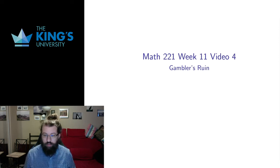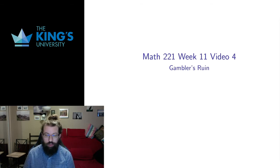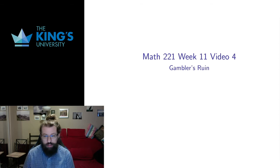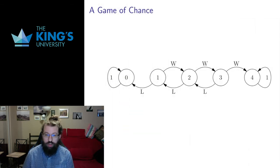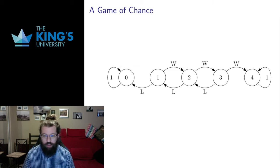Welcome to video 4 for week 11. In the previous video, I gave the definitions and the ideas of Markov chains, stochastic matrices, and probability graphs. Here I want to talk about a very specific example to make the material from video 3 a little bit more concrete. I'm going to choose a very simple game — we could model much more complicated games, but I want to choose something simple so that it's clear how the Markov chain is working.